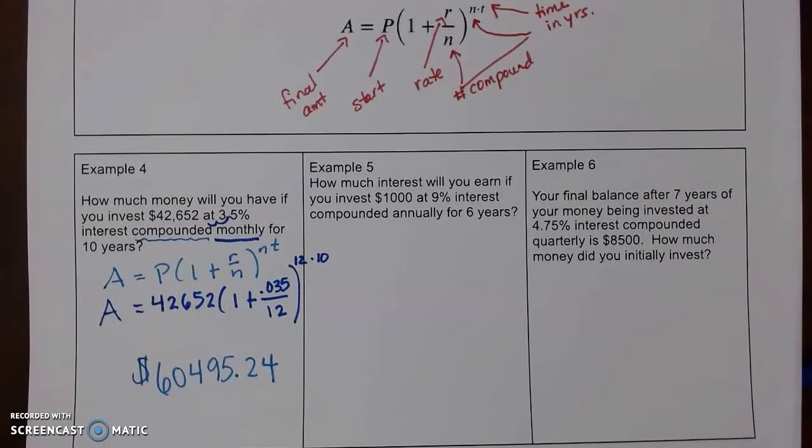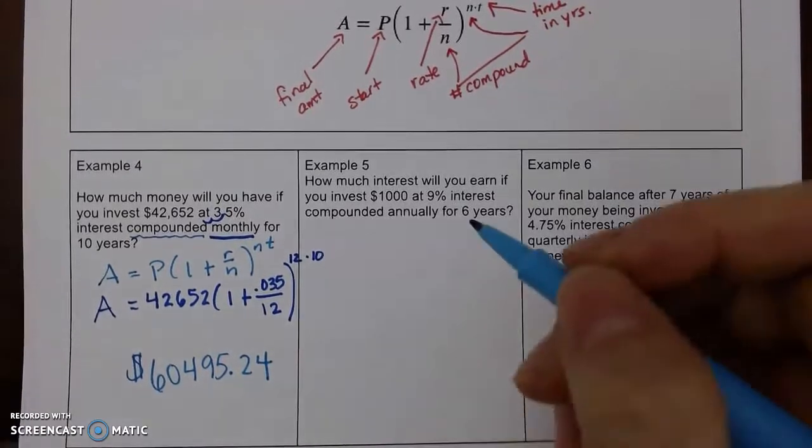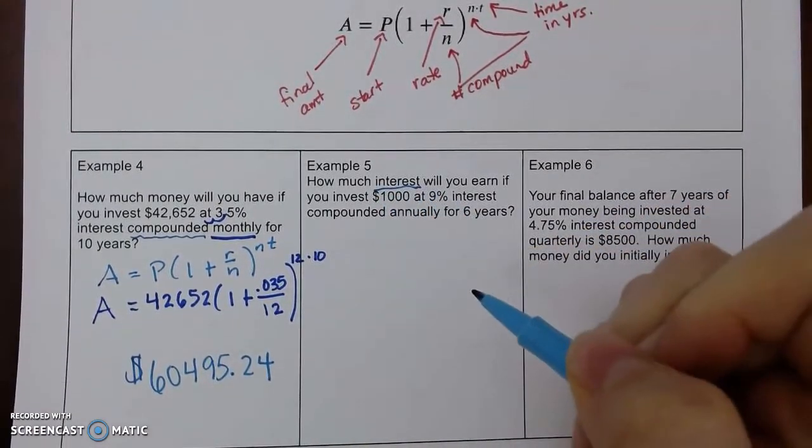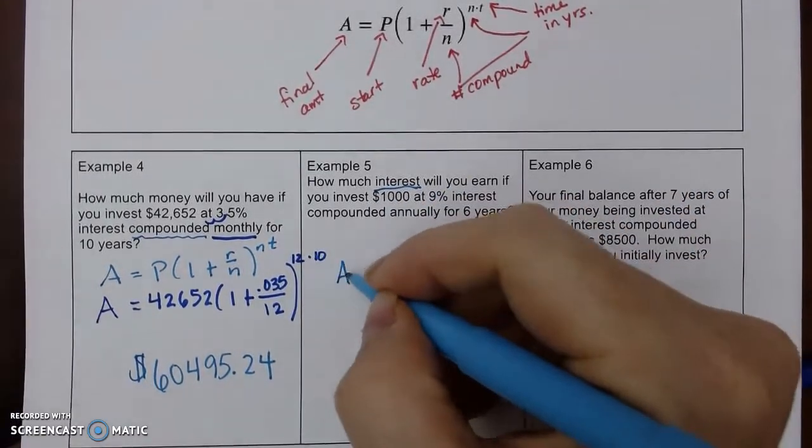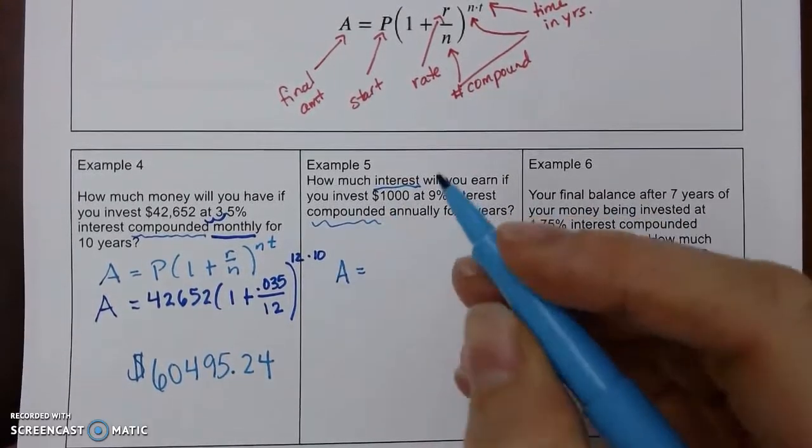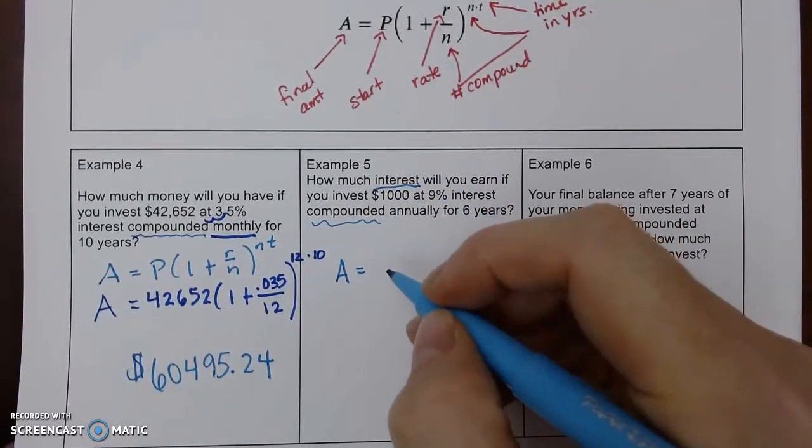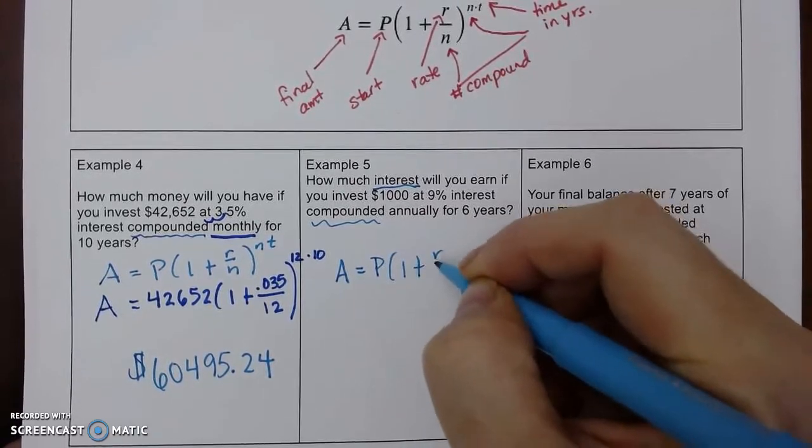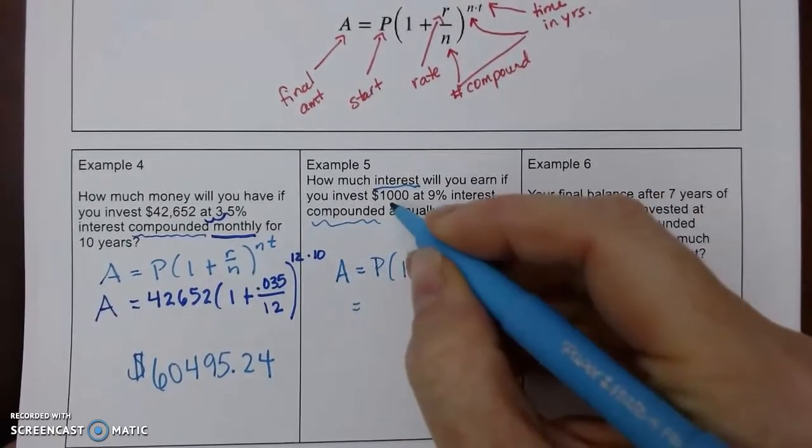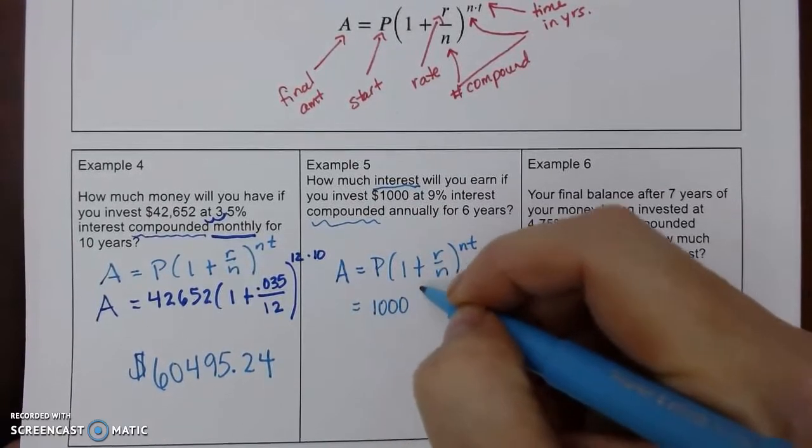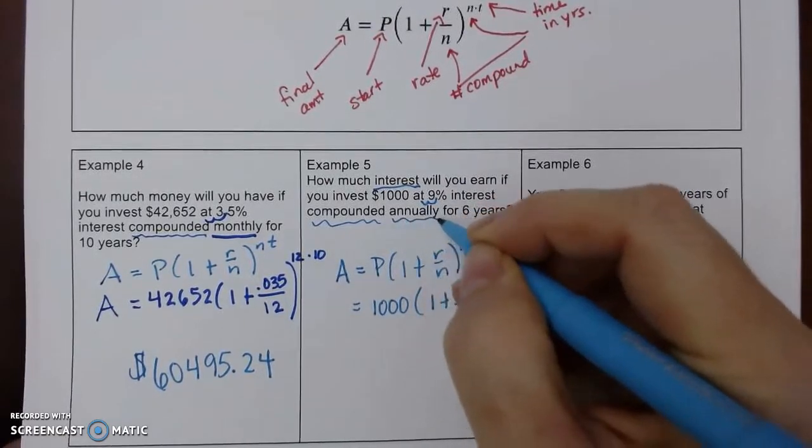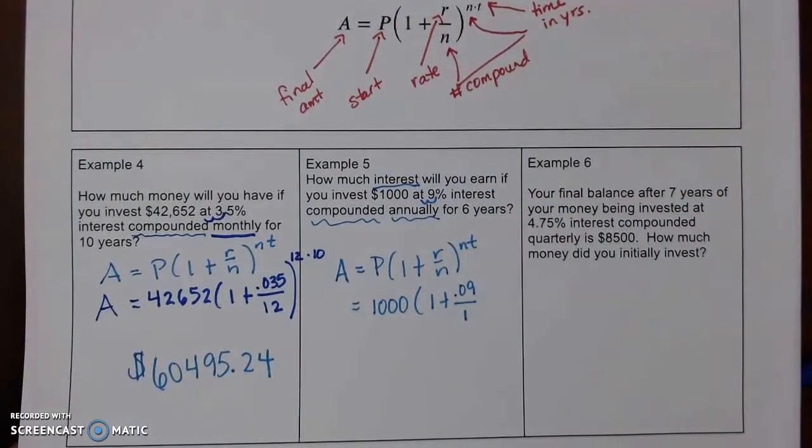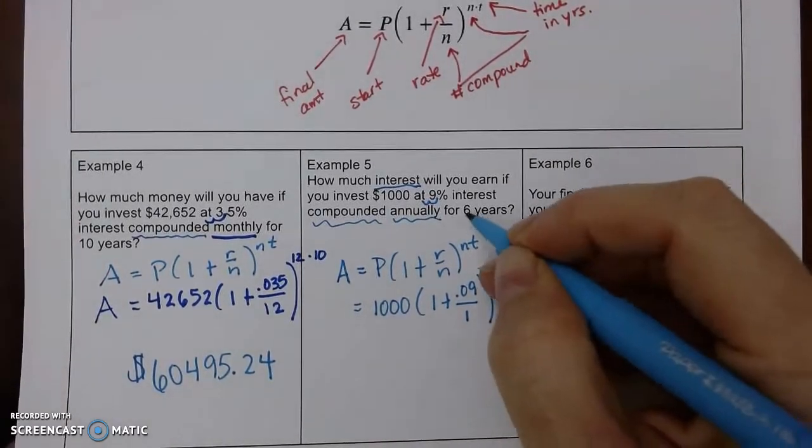So, this figures out your interest and adds what you start with all together. So, example 5. How much interest will I earn if I invest this much? So, I've got A equals, we see the word compounding, P, 1 plus R over N to the N T. So, we're starting with $1,000. 1 plus my rate is 0.09. This is annually, which means it's only going to happen once a year. And then N times T is 6.